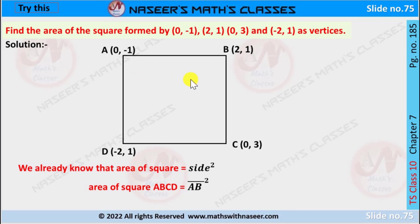We already know that in a square all sides are of equal length. Then we can write the area of the square is equal to side squared. So here area of ABCD is written as AB all square.